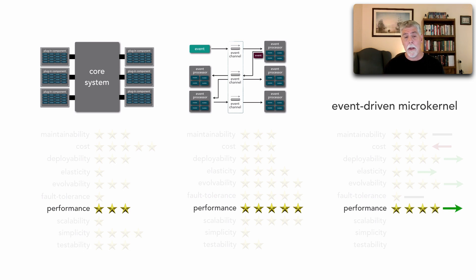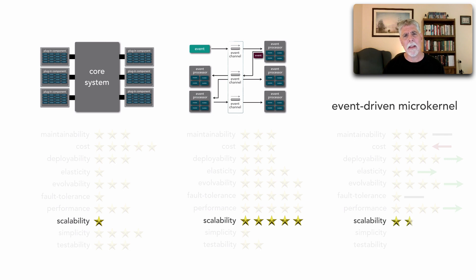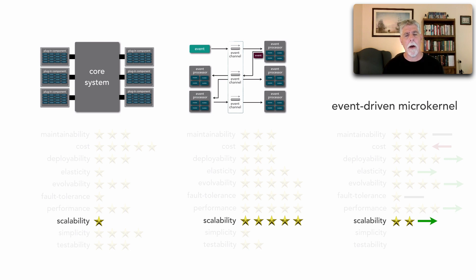For performance, we do gain one extra star because of asynchronicity — we don't necessarily have to wait for the request to come back from the plugin. In fact, we can run several plugins in parallel using asynchronous messaging and multicast to do multiple activities at once within the core system. Scalability, like elasticity, only really gains an extra star. We get a little better scalability because of the asynchronous behavior in communication with the plugins — we may be able to do a fire-and-forget message, so we're not in the core system as long and it can handle more requests.